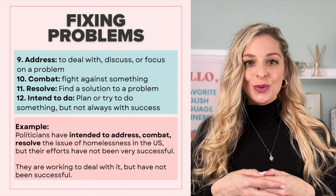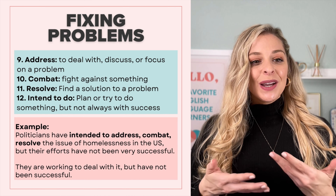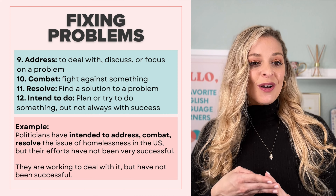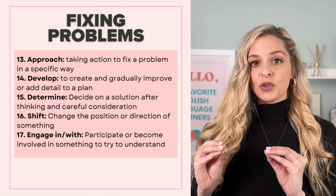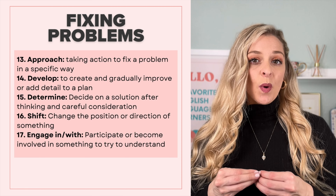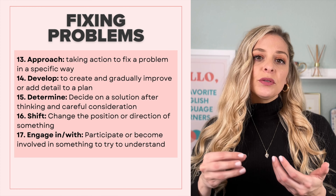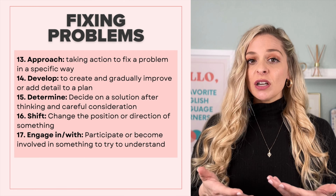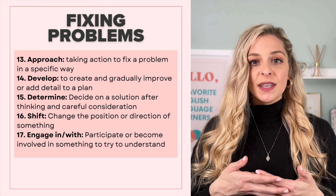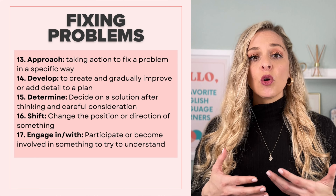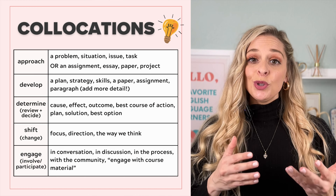Which leads me to our next word: intend to do something. This means to plan or try to do something, but not always with success. So continuing with our example, we can say politicians have intended to address, combat, or resolve the issue of homelessness in the U.S., but their efforts have not been very successful. Our next word is to approach — this means taking action to fix a problem in a specific way, and you are probably very familiar with the noun form of this word as well. We also have to develop, which means to create and gradually improve or add detail to a plan. To determine means to decide after thinking and careful consideration. To shift means to change the position or direction of something. And to engage in or engage with something means to participate or be involved in something to try to understand.